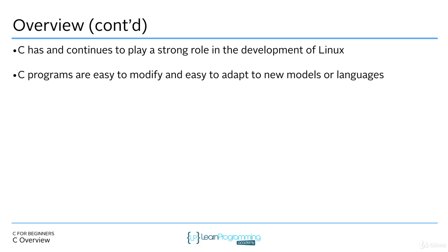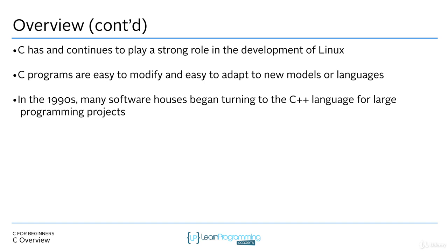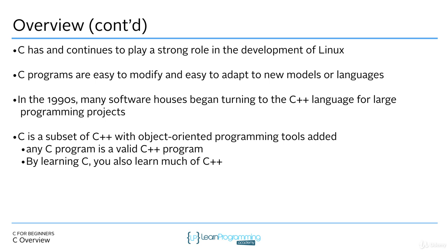C programs are high-level, meaning they're more or less easy to modify and adapt to new models or languages. In the 1990s, many software houses began turning to the C++ language for large programming projects. The reason that matters is because C is a subset of C++. C is organized around functions and module design, while C++ is organized around objects. If you learn C, you're going to know a lot about C++. Any C program you write is a valid program in C++, and C is a subset of C++.